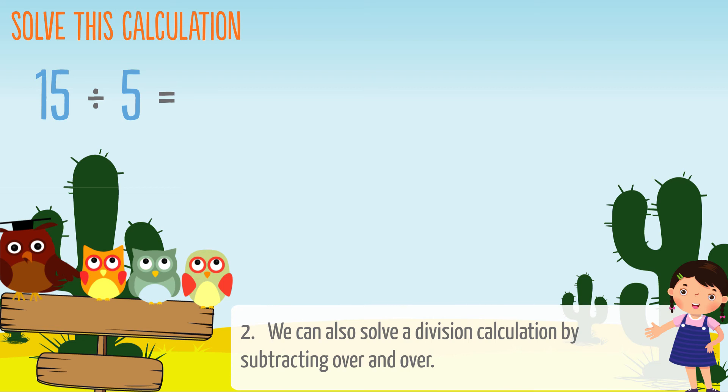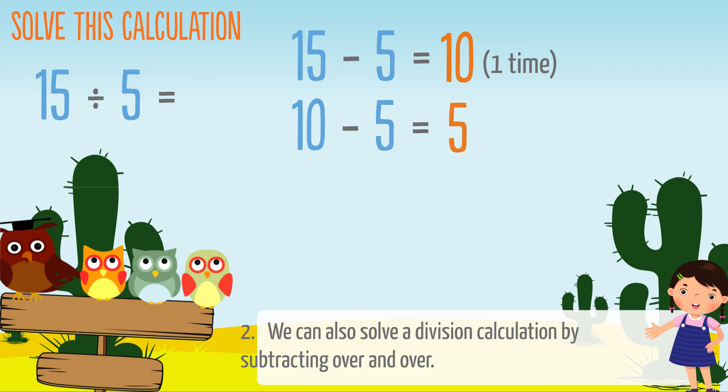15 subtract 5 equals 10, one time. 10 subtract 5 equals 5, two times. 5 subtract 5 equals 0, three times.